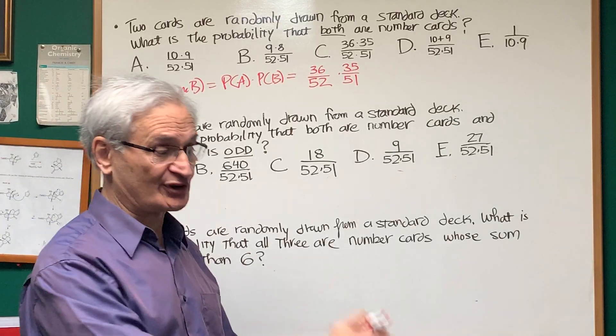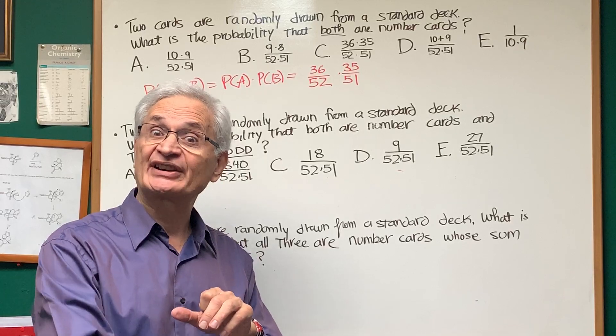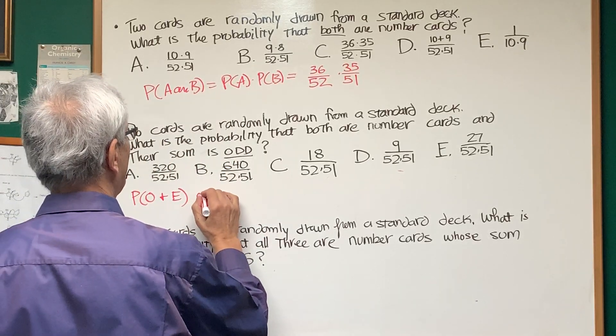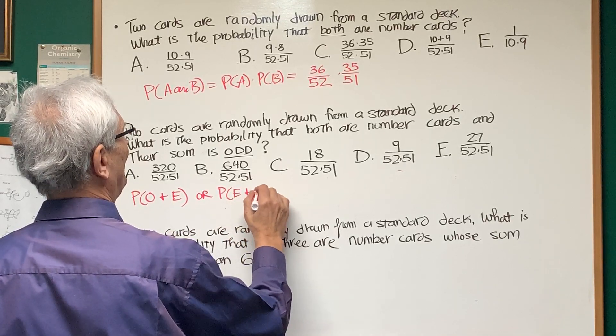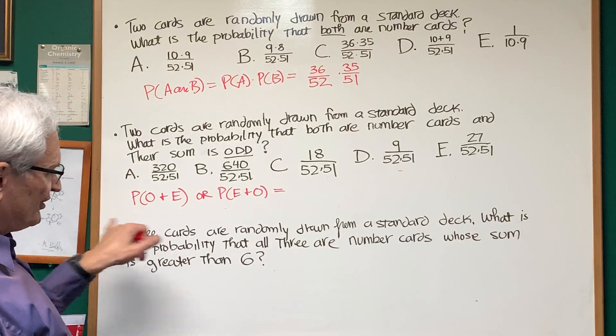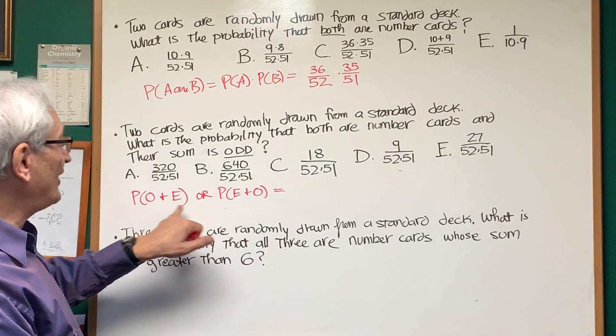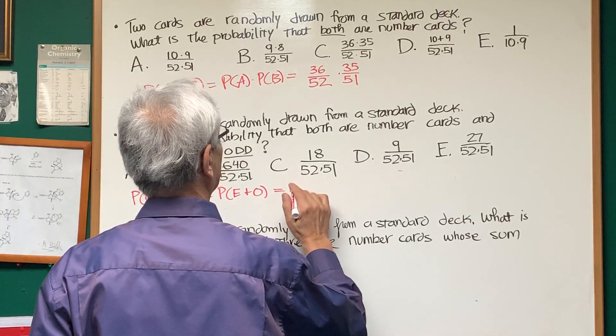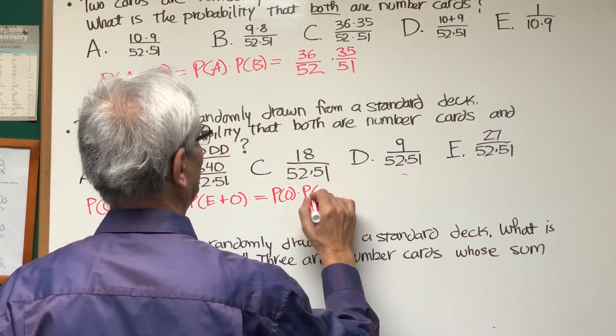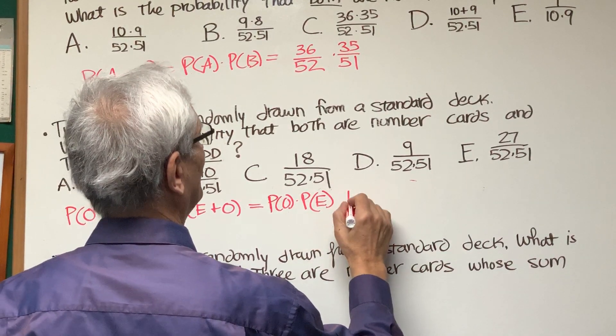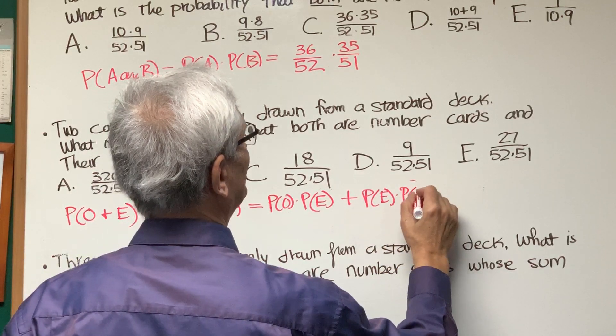So we want, what do we want to have happen here? We want an odd and an even, right? As we draw the two cards out, first an odd, then an even. Then we have to consider the other possibility of drawing an even first, okay? Or, probability of even first and then an odd. So this is going to translate into a product and a sum. The product when I have an and, the sum when I have or. So the product of, I'm going to have the probability of odd times the probability of even plus the probability of even times the probability of odd.